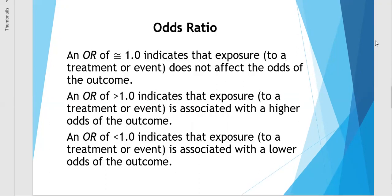So the interpretation of an odds ratio is that a 1.0, so an exact 1, is indicative of no association between the exposure to the treatment or event and the outcome. So it's very much like a Pearson R of 0. Remember that in a Pearson correlation, an R value of 0 is indicative of no correlation, no association. Well, an odds ratio of 1.0 is the same. It is indicative of no association.